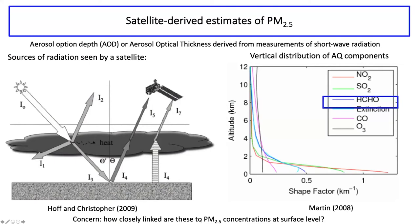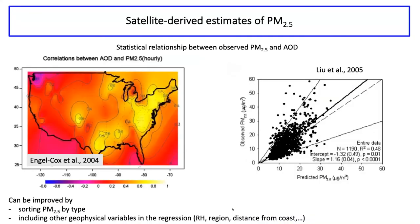This raises the question of how closely PM2.5 concentrations at the surface are linked to what a satellite sees. One approach is statistical. A paper from Engel-Cox et al. in 2004 looked at all PM2.5 measurements collected at surface monitoring sites in the U.S., correlated those with aerosol optical depth measurements from satellites, and made a map of that correlation smoothed across the entire U.S. The correlation in some parts of the country is quite high — above 0.6 or 0.8 — while other parts are lower.